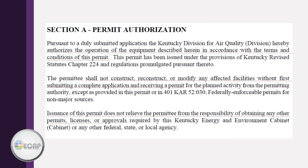This is Section A. Its look will vary depending on the type of source you are. This Section A was taken from a conditional major permit. Paragraph 1 states an application was submitted and the Division of Air Quality authorizes the operation of equipment in accordance with the terms and conditions of the permit. Paragraph 2 states submitting a complete application and receiving a permit is required prior to construction, reconstruction, or modification, with any exceptions noted in the permit. Paragraph 3 states obtaining the permit does not relieve the permittee of the responsibility of obtaining other required permits, whether federal, state, or local.